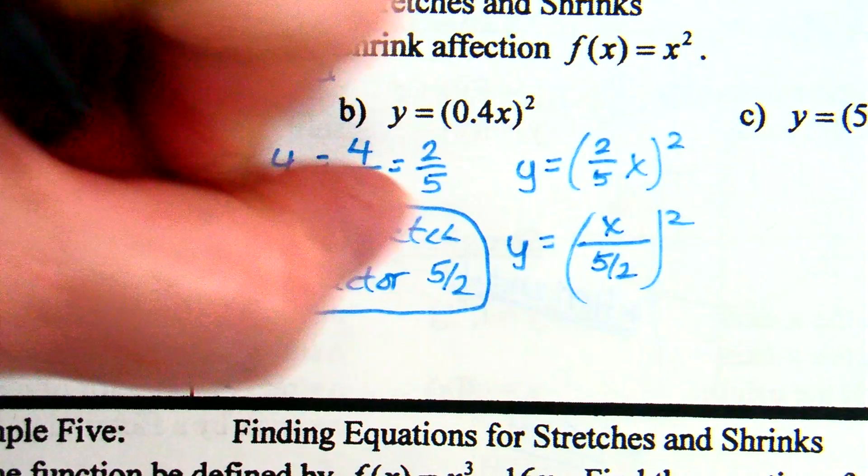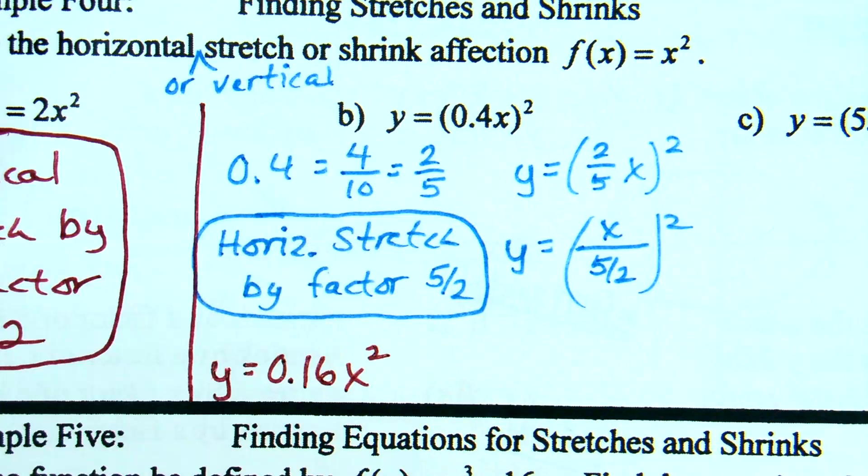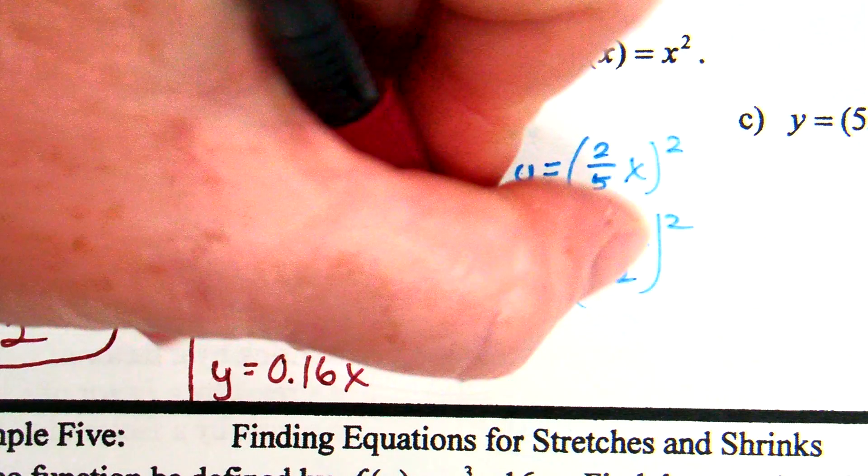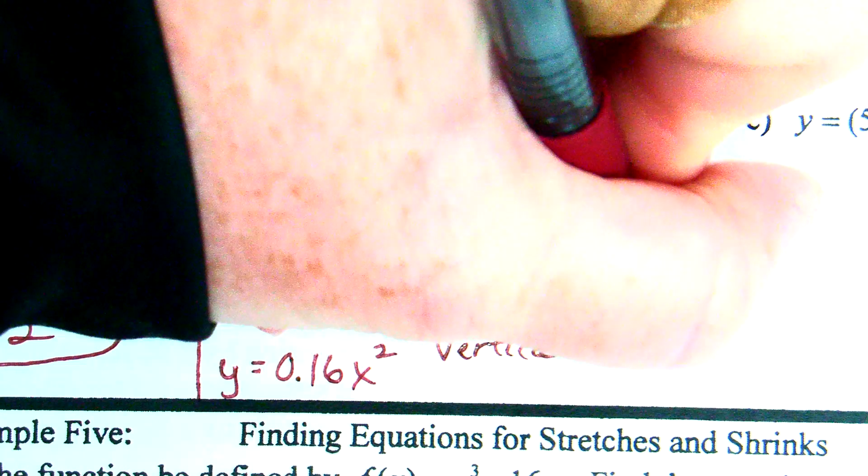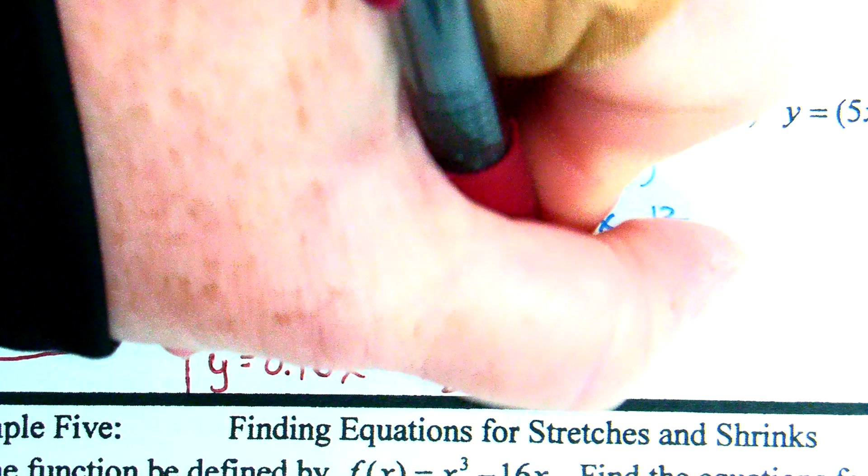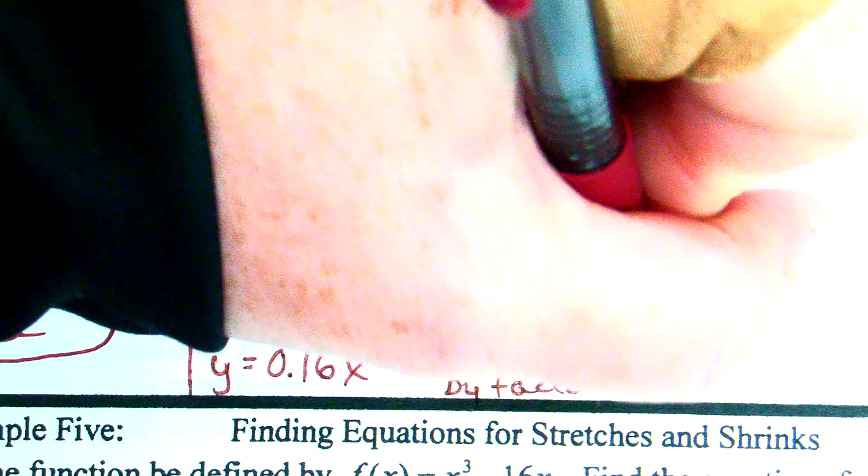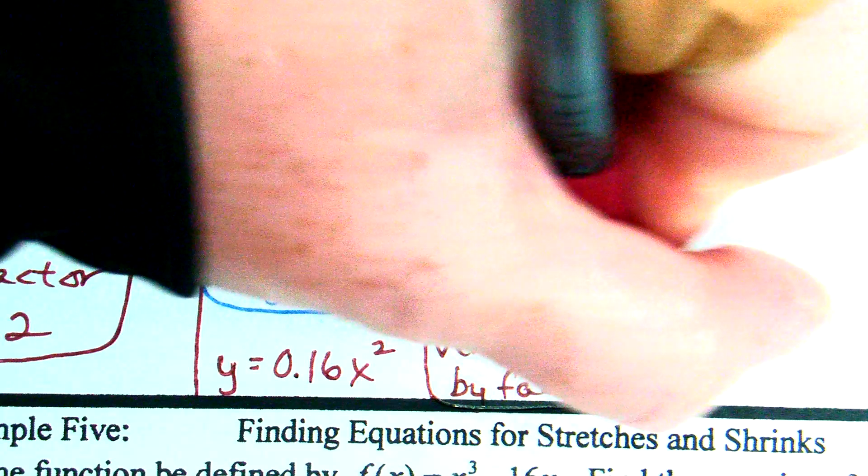And so, this could be rewritten to think of it as 0.16x squared. Well, if I write it in this sense, 0.16x squared, it's a number times x squared, yes? If it's a number times x squared, this now fits into the vertical world. And this is a vertical what? Vertical shrink because it's a number less than 1. So, the other option here is vertical shrink by factor, and in this case, I just left it decimal, 0.16.